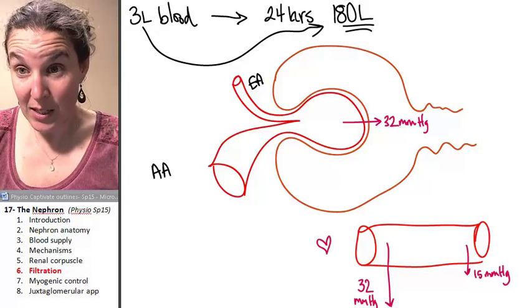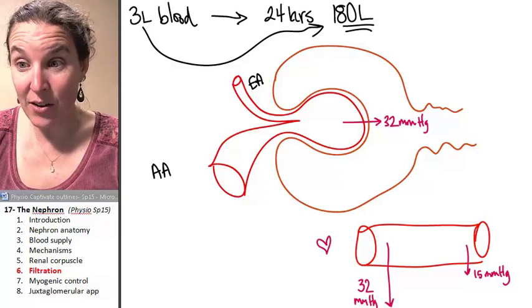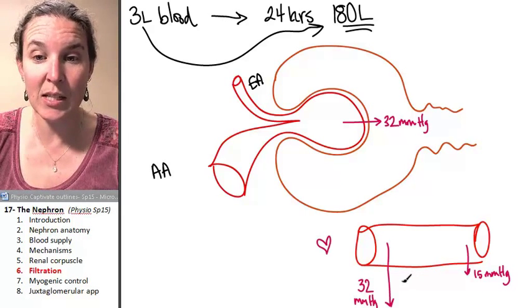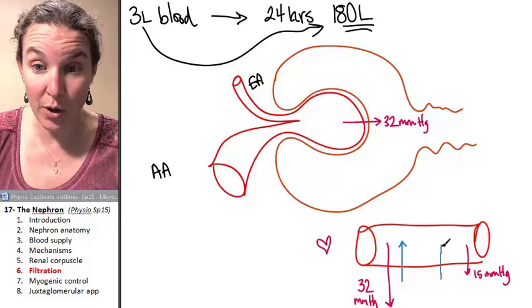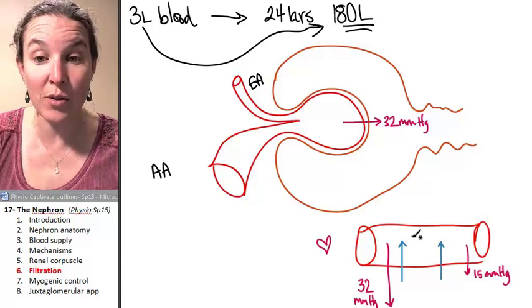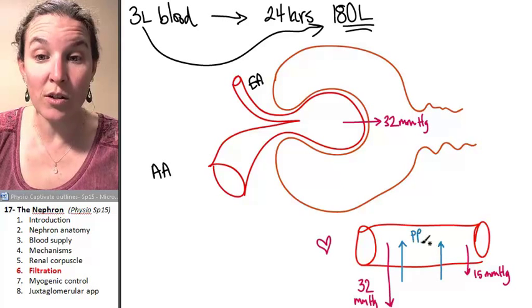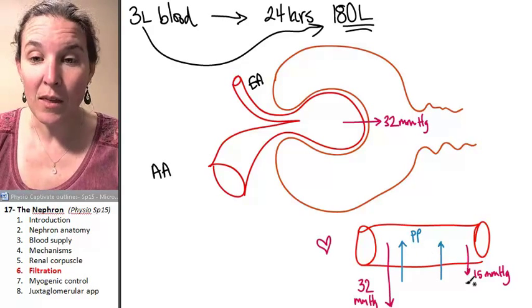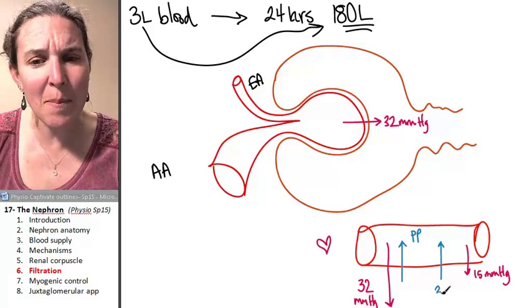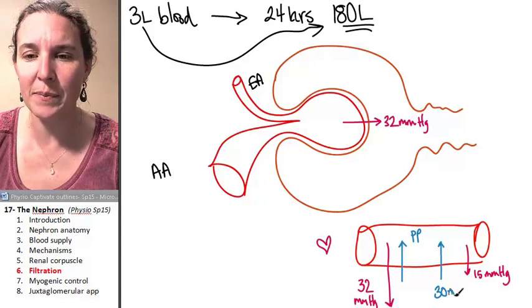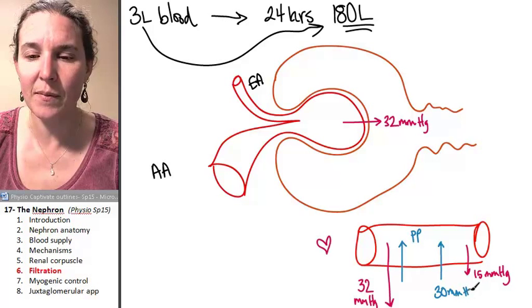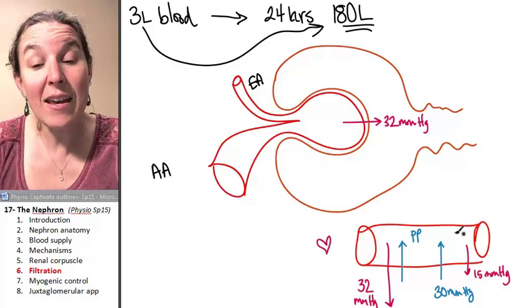It's because, remember, we had another kind of pressure drawing stuff in. This pressure is steady. This was osmotic pressure due to plasma proteins. We'll do it due to PPs, the plasma proteins. And this is about 30, 25 to 30 millimeters of mercury.